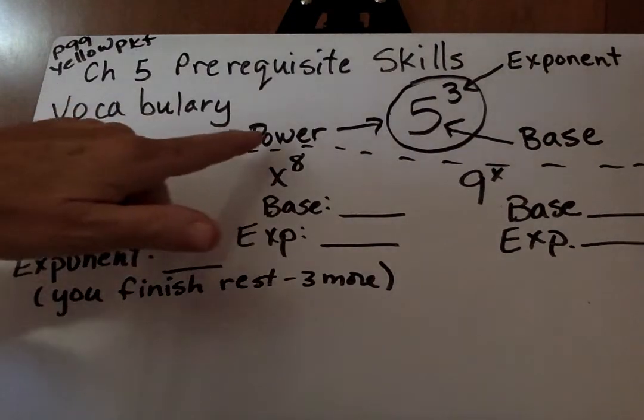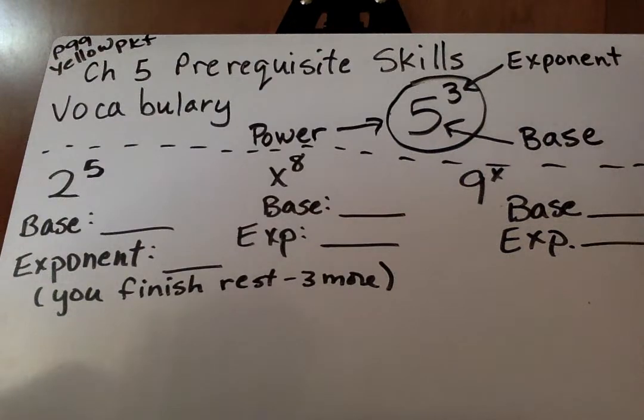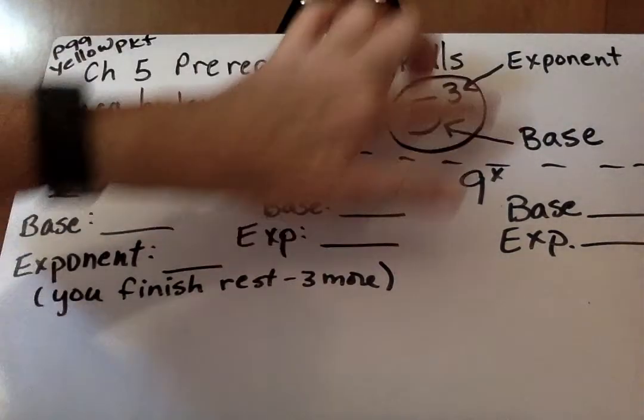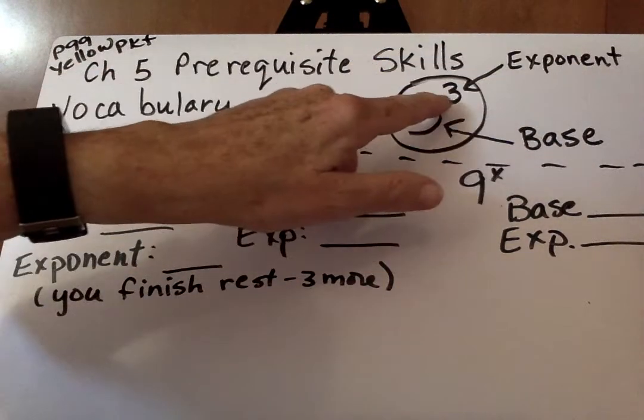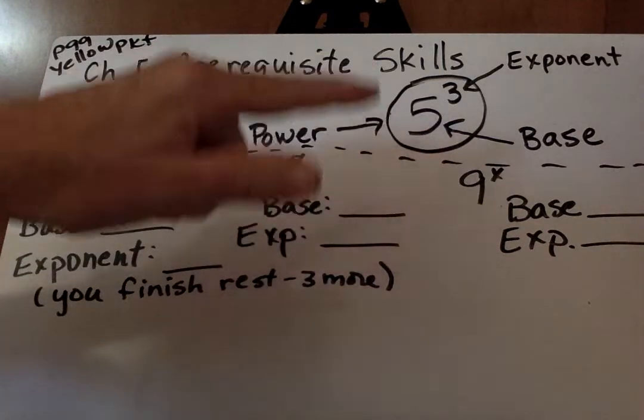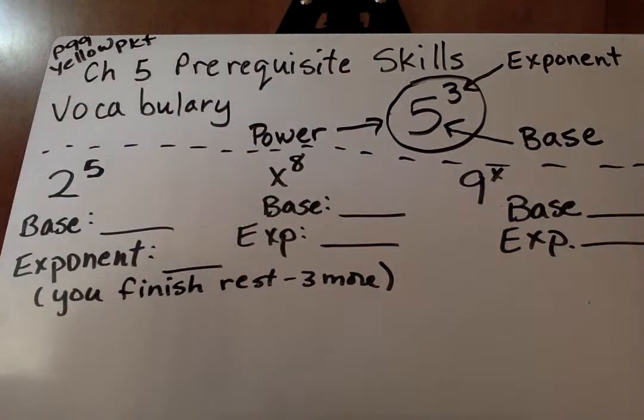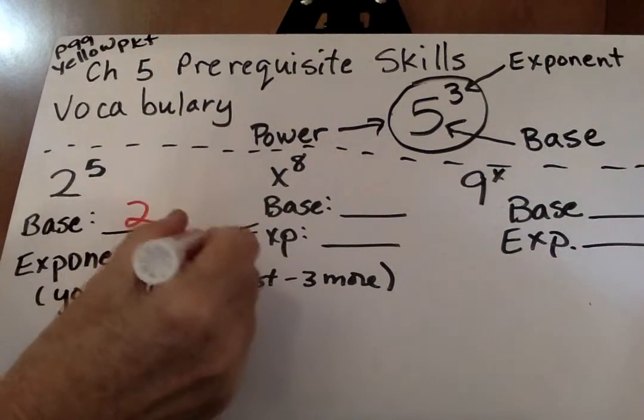So our vocabulary shows the power is the whole thing. Sometimes the exponent is also known as the power, but in general, the power is like the whole thing. The bottom is the base, and the little number is the exponent. It tells the base how many times to multiply itself. So for here, our base is 2, and our exponent is 5.